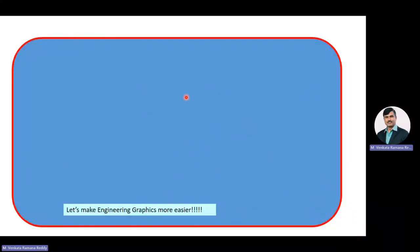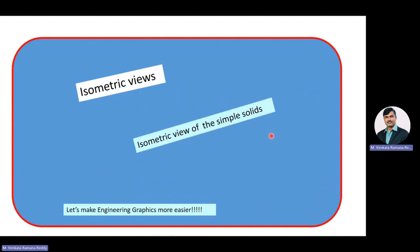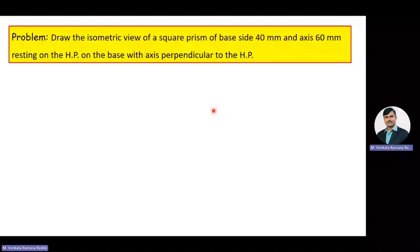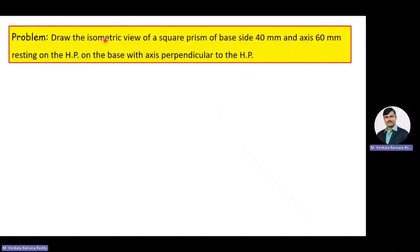Hello everyone, we are in the discussion on the subject engineering graphics. Under engineering graphics, we are discussing a topic called isometric views. Under isometric views, we are going to solve a problem on isometric view of simple solids. The given problem is: draw the isometric view of a square prism of base side 40 mm and axis 60 mm, resting on the HP on the base with the axis perpendicular to the HP.